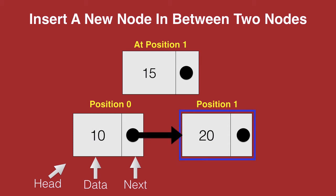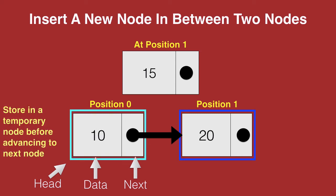Once we traverse the list to position 1, we see that from the previous node, which is the node at position 0, the next of that particular node needs to point to our new node. Now in a singly linked list, once we reach the node at position 1, we cannot go back to the node at position 0. So before we advance to the node at position 1, we need to store the details of the node at position 0 in a temporary node.